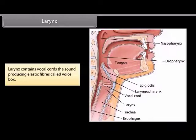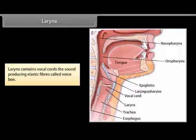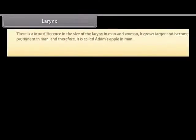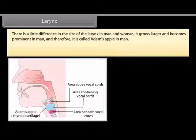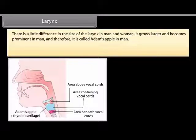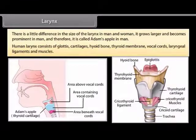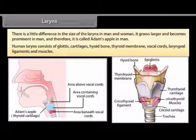The larynx contains vocal cords — the sound-producing elastic fibers called the voice box. The larynx is slightly larger in men and becomes prominent, forming what is called Adam's apple. The human larynx consists of the glottis, cartilages, hyoid bone, thyroid membrane, vocal cords, and laryngeal ligaments and muscles.